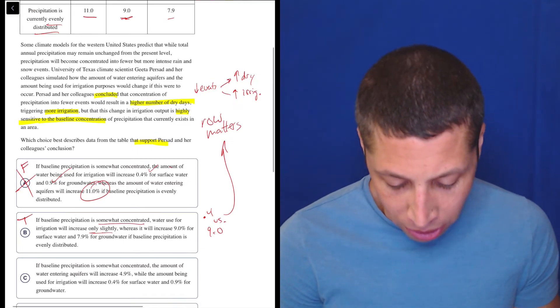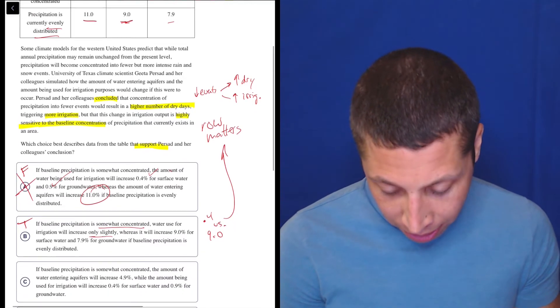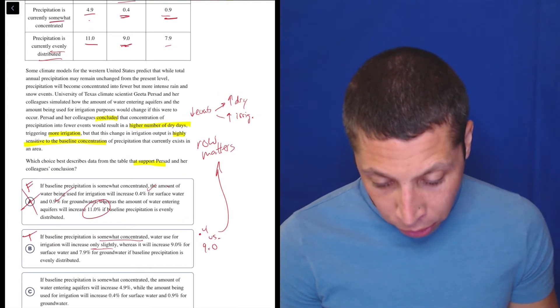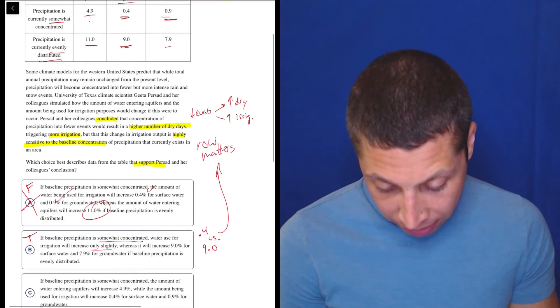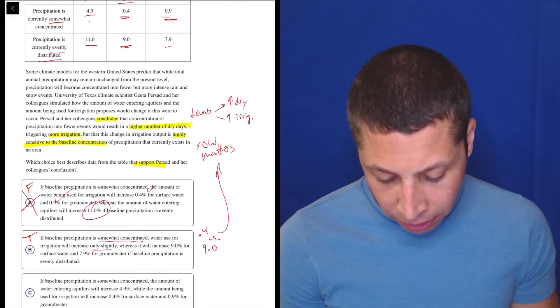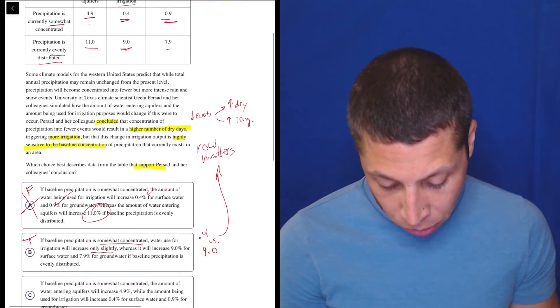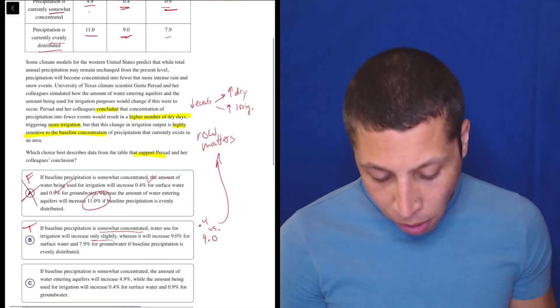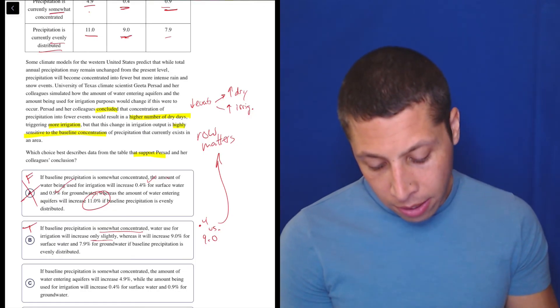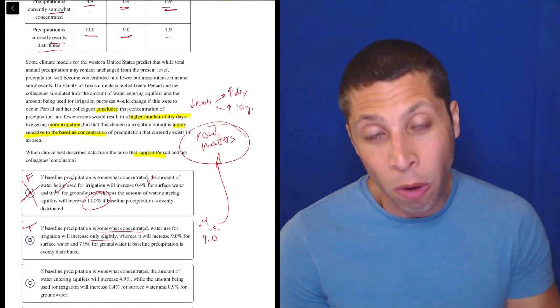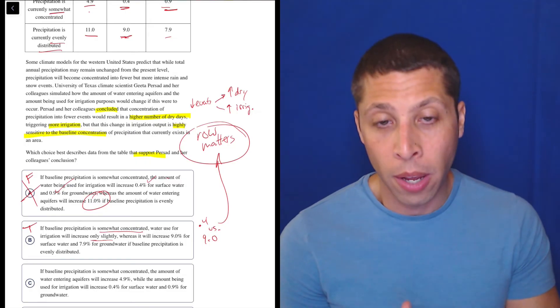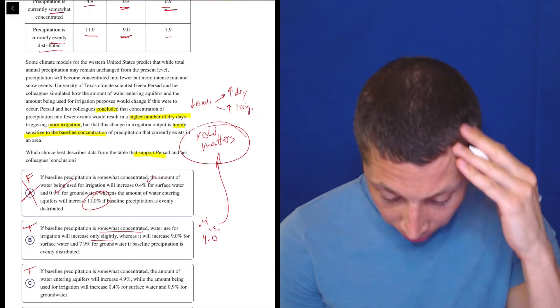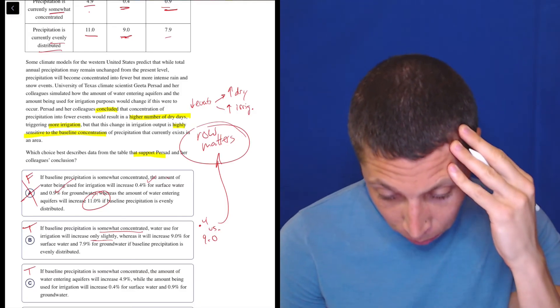Choice C: if baseline precipitation is somewhat concentrated, somewhat concentrated, that's the top row. It's hard to fit all this. The amount of water entering aquifers will increase 4.9%. Yep, that seems right. While the amount being used for irrigation will increase 0.4%, that seems right, for surface water and 0.9% for groundwater. So that seems right. But notice it's not talking about the two different rows. If the row matters, but we're only talking about one row, that seems wrong. So this is a good, I feel like it's true. Again, I could be misreading it. The amount of water entering 0.4, 0.9. Yeah, it seems like the right thing.